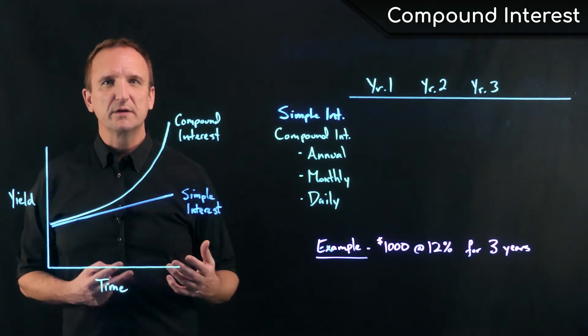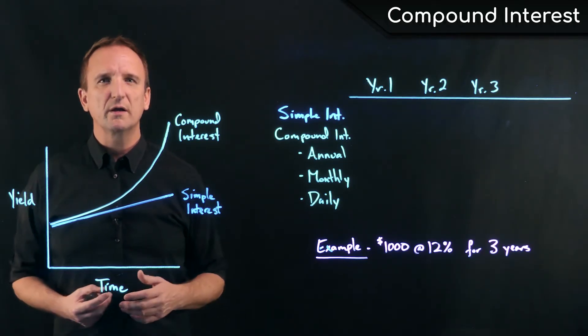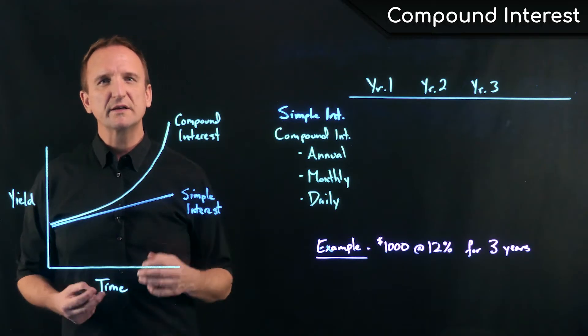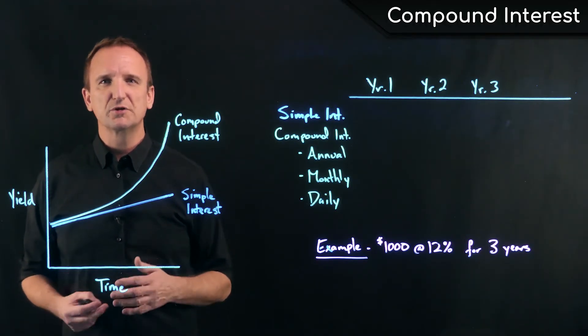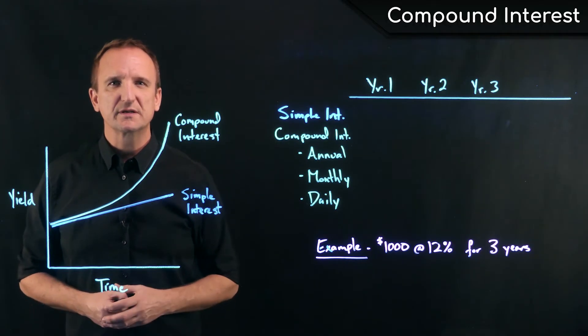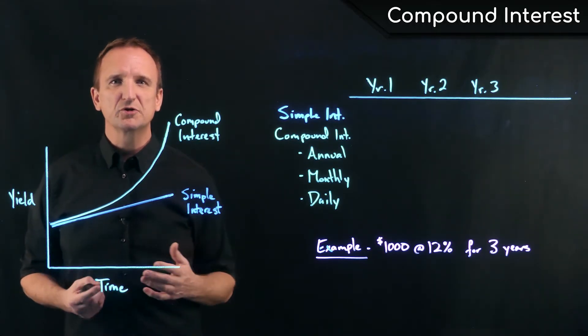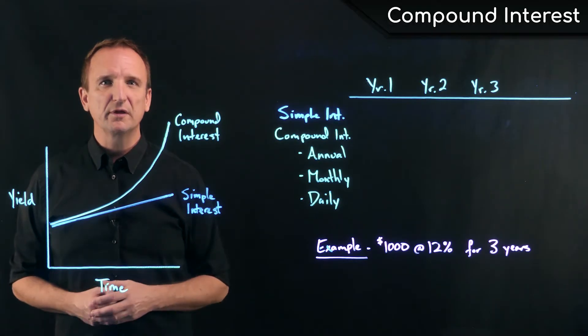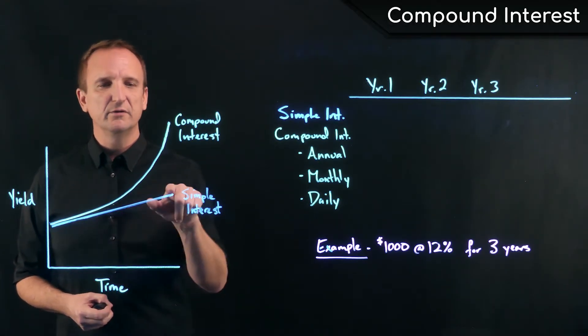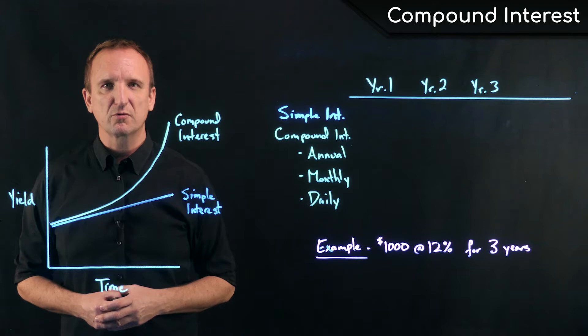The difference between simple versus compound interest is whether or not interest earned is reinvested or capitalized onto the original amount. Simple interest is not added or reinvested into the original principal amount, so the amount of interest earned is the same throughout the life of investment, effectively yielding a straight line return or yield.